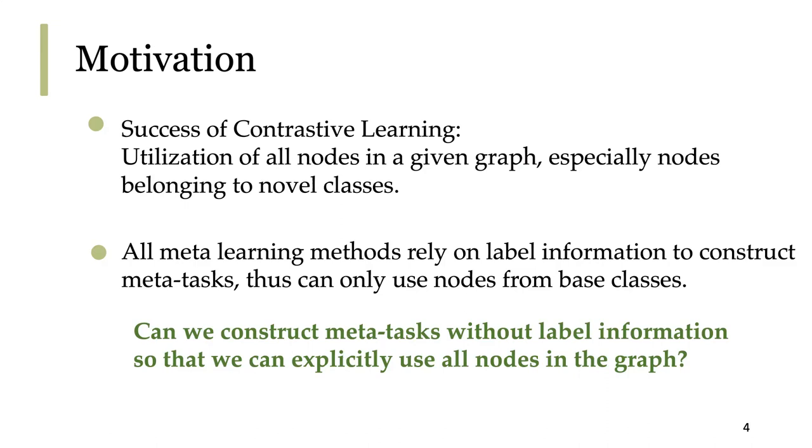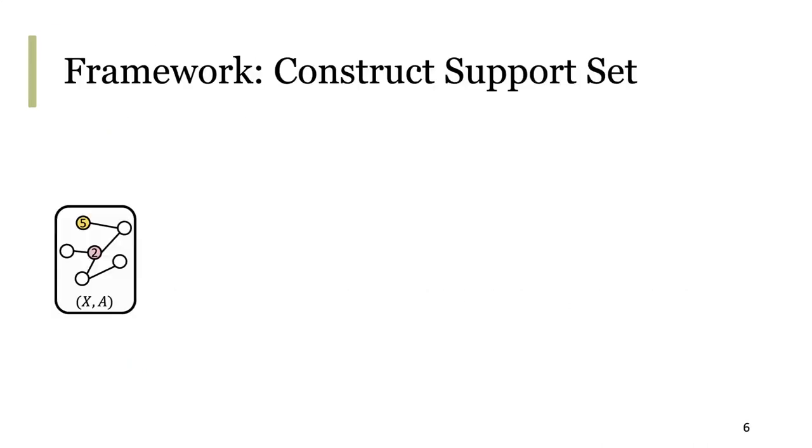We achieved this by developing a novel way to construct meta-tasks in an unsupervised manner. Let's walk through an example of how we can create a 2-way 3-shot meta-task for a given graph. We first sample node 2 and node 5, and regard them as two ways.